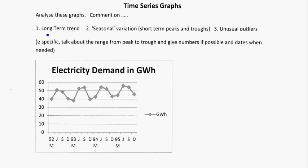When we talk about these, we're going to talk about the long-term trend — this is the overall big picture. Generally, what do we see happening? You can think about using a line of best fit, like we do for scatter graphs, to describe the long-term trend. Then there's seasonal variation, or short-term peaks and troughs.